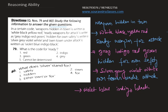Now we have to find the code for 'ready.' To find this answer, we have to compare two statements simultaneously. The first statement is 'weapons hidden in town' and the next statement is 'ready weapons for attack.' The common word in these two statements is 'weapons.' Therefore we find the common code word among their codes, and the common code word is 'red.' So the code for weapons is red.